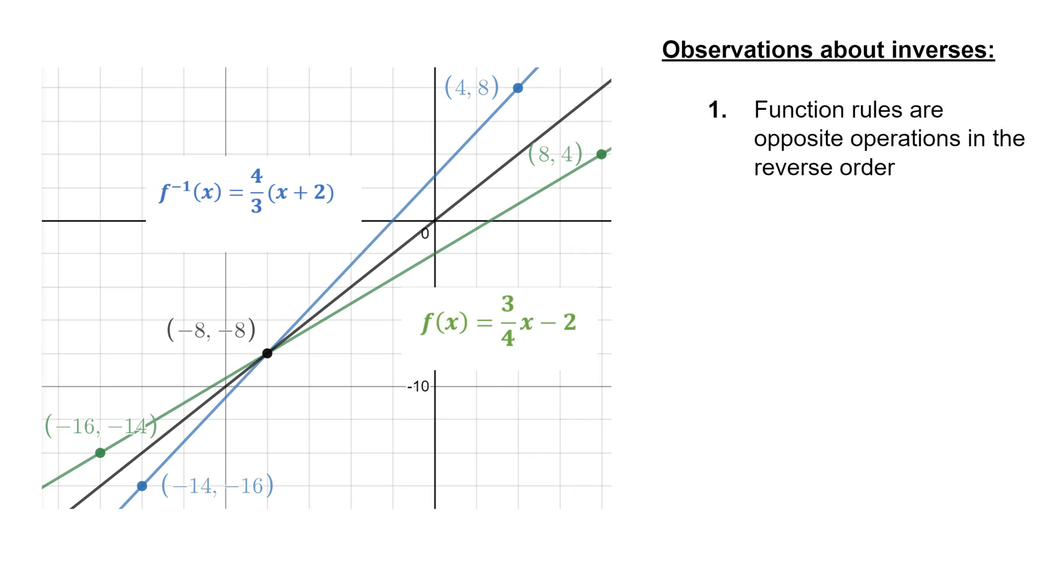Number 1, these function rules are opposite operations in the reverse order. So for f of x, we have 3 fourths times x minus 2. So the two operations are first, multiplying by 3 fourths, and second, subtracting by 2.